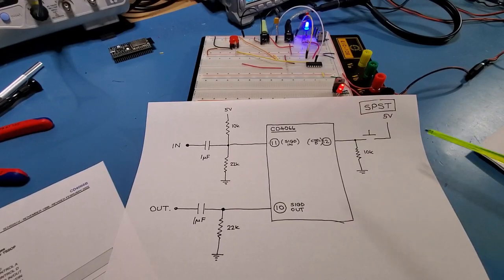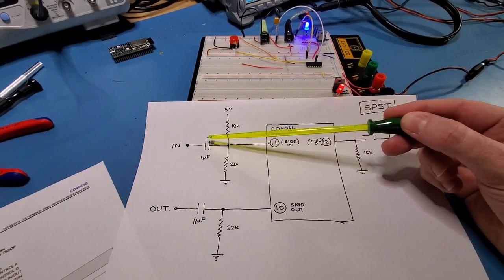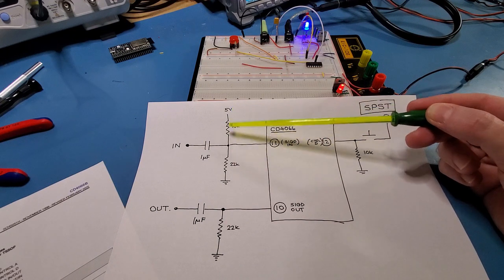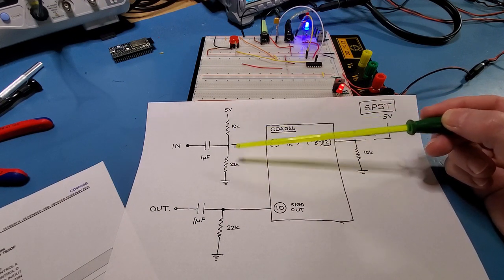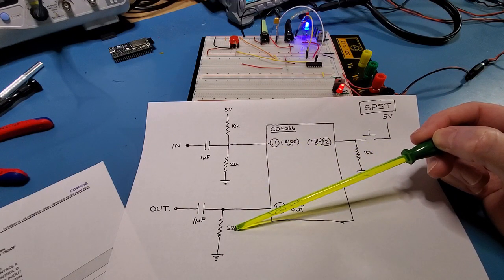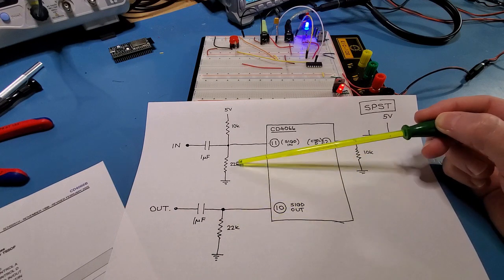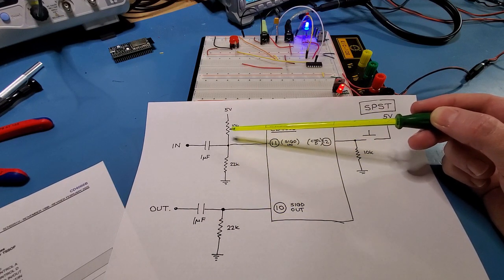Okay so here's the single pole single throw setup here. Here's the incoming signal here, decoupling cap. Here's my mid-rail bias here and it's 10k and 22k but this 22k is actually in parallel with this 22k on the output which gives 10k which then forms the mid-rail bias.